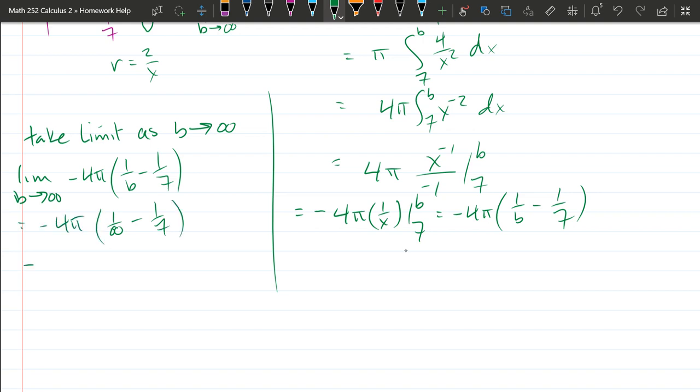And we have negative four pi times zero minus one seventh. Two negatives. You multiply two negatives, they cancel. So we have four pi over seven. And that should be our volume.